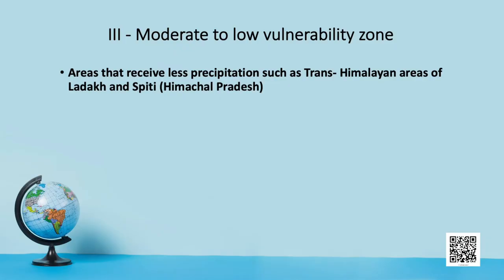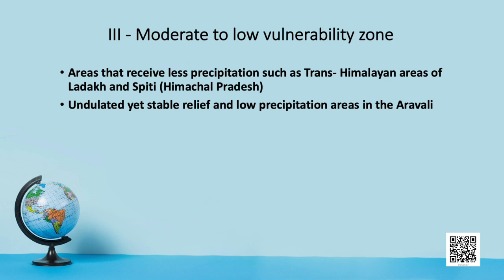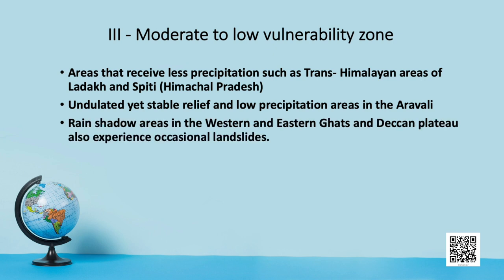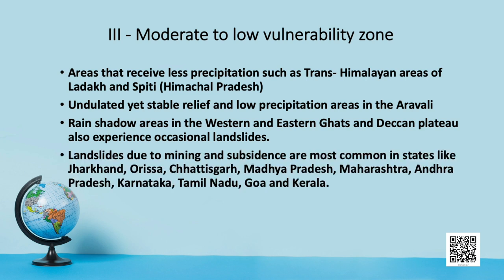Moderate to low vulnerability includes areas which receive less precipitation, such as the trans-Himalayan areas of Ladakh and Spiti in Himachal Pradesh, undulated yet stable relief and low precipitation areas in the Aravali hills. The rain shadow areas of the Western and Eastern Ghats and Deccan Plateau also experience occasional landslides. Landslides due to mining and subsidance are more common in states like Jharkhand, Odisha, Chhattisgarh, Madhya Pradesh, Maharashtra, Andhra Pradesh, Karnataka, Tamil Nadu, Goa and Kerala.